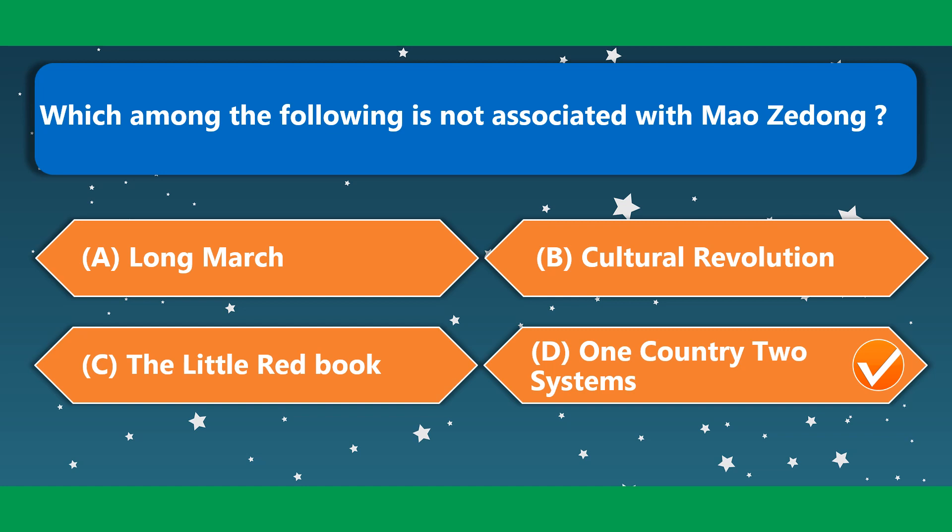Which among the following is not associated with Mao Zedong? Let us see one by one. Long March — it is related to him. Cultural Revolution — it is also related to Mao Zedong. The Little Red Book — also related. One country, two systems — it is not related to Mao Zedong.